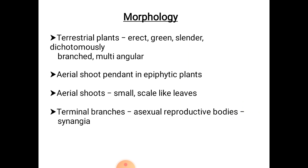There are two types of leaves: sterile and fertile leaves. Sterile scale leaves are present all along the length of the aerial shoots, whereas fertile scale leaves are restricted only to the upper portion which bears synangia in their axils.